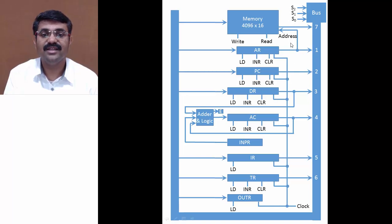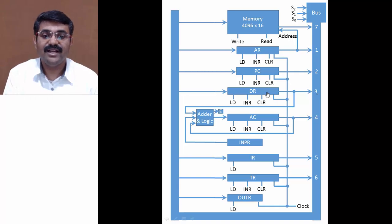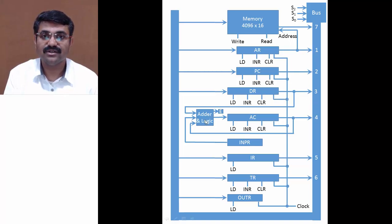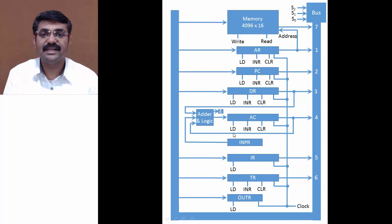Now changing the select lines to 0-1-1, the content of the Data Register is transferred to the bus. Importantly, since DR is also connected to the adder and logic unit, the data from DR is simultaneously transferred to the adder and logic unit. The adder and logic unit then transfers this data to the accumulator by enabling the load signal of AC. This is how data is transferred from memory to accumulator using the common bus system.